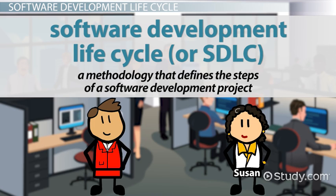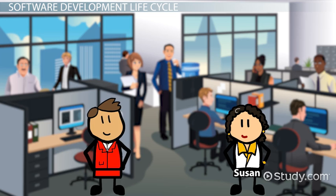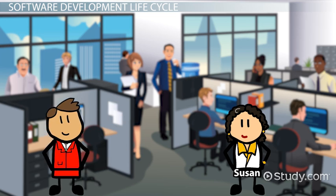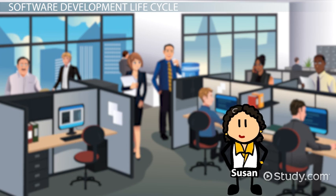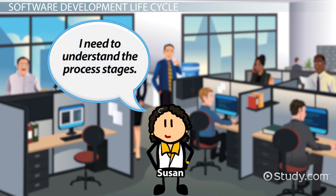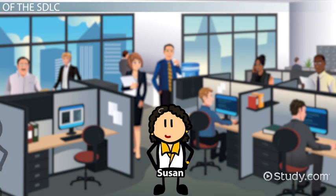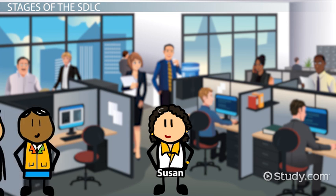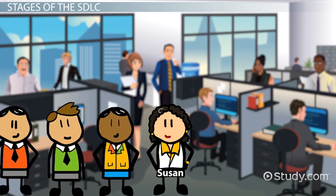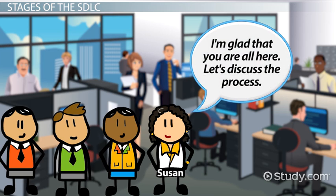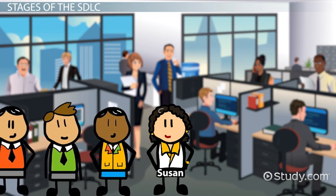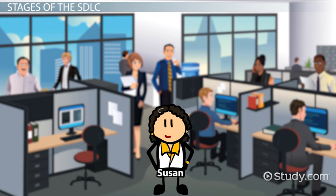The SDLC is a methodology that defines the steps of a software development project, and there are several stages. Susan wants to follow the SDLC, but needs to understand each stage in the process before providing instructions to her project team. Each stage in the SDLC produces deliverables and outcomes that are required to begin the next stage in the process. We'll now look at each of these stages and what happens during them.